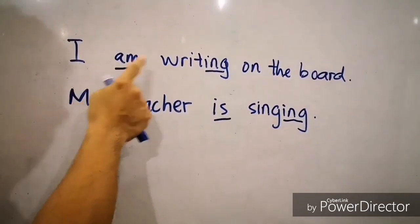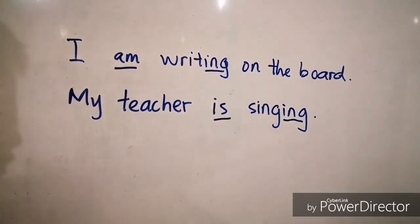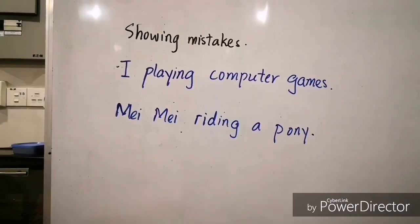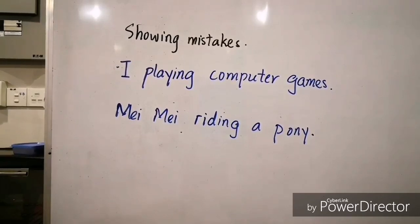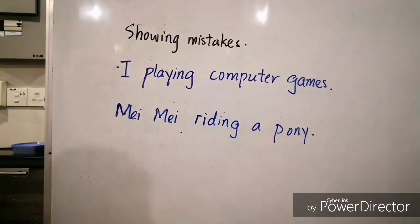With the -ing, you have to go with am or is. If there is no am or is, your sentence is wrong. Now I'm going to show you the mistakes in these two sentences. Before that, I want you to read these two sentences in one minute.